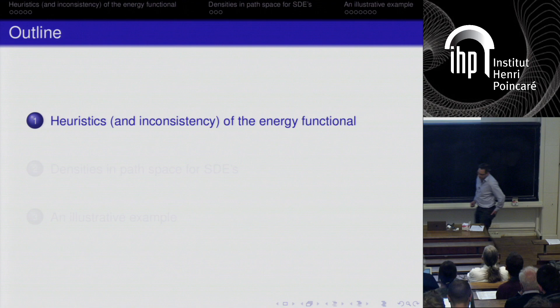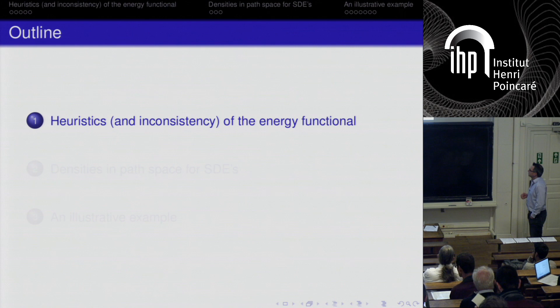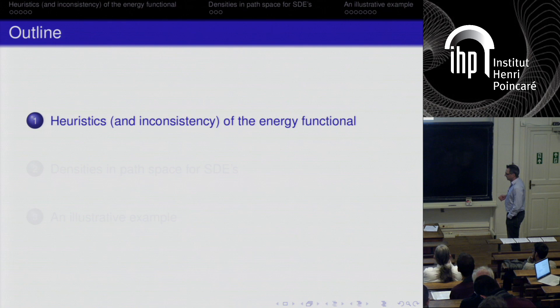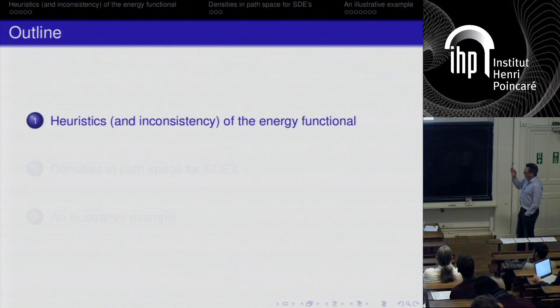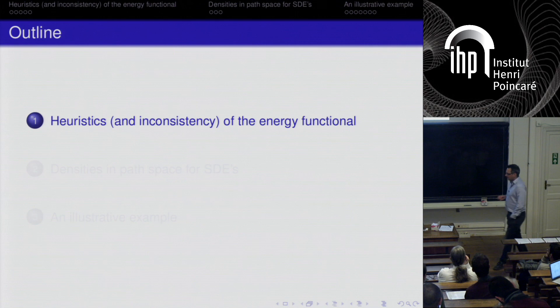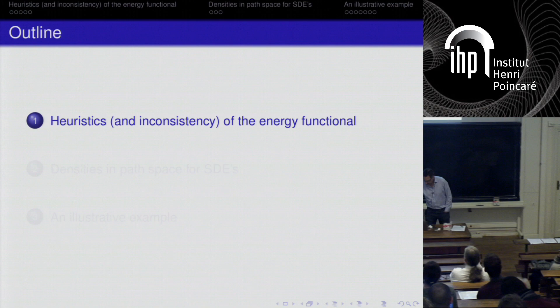In variational data assimilation, what has been very common is to minimize a functional that is a combination of the observational error and the dynamical error. With regards to the dynamical error, I think I have a point to make, because what is very commonly done is that some sort of energy functional is used. I think we have to reconsider whether that is actually the right functional, and I am going to explain what I see as a problem with it.